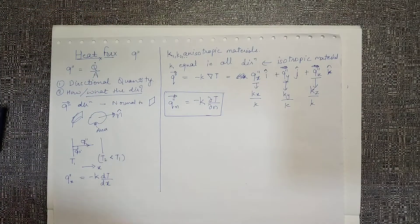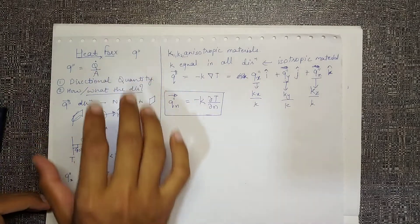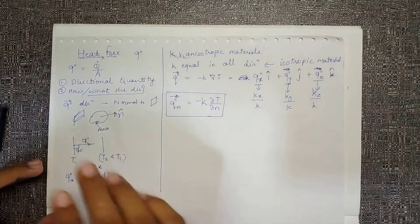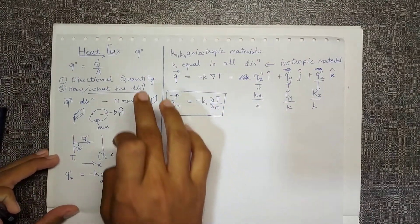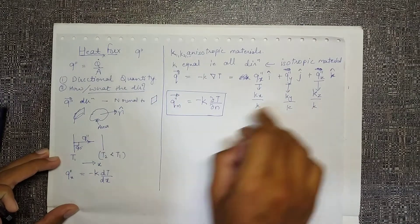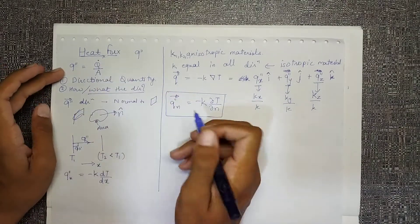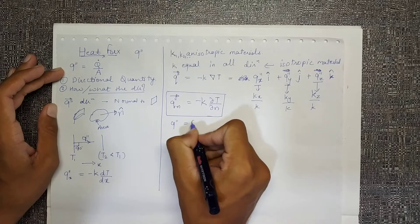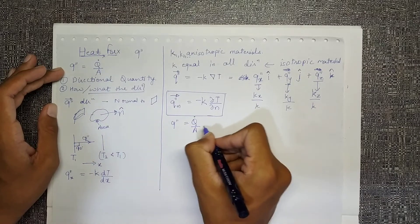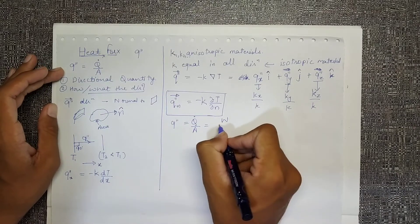This was the basics about heat flux. It's a directional quantity and how do we define the direction is defined over here. The formula is q double dash equals q dot upon A. The q dot has units of watts and A has meter square, hence the flux has units of watts per meter square.